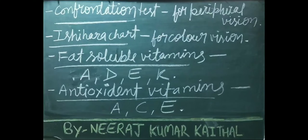The confrontation test is used to check peripheral vision. The Ishihara chart is used to check color vision. Fat-soluble vitamins are vitamins A, D, E, and K.